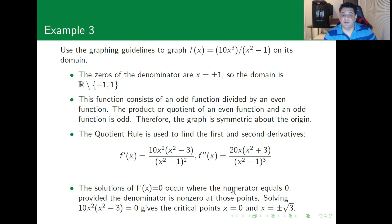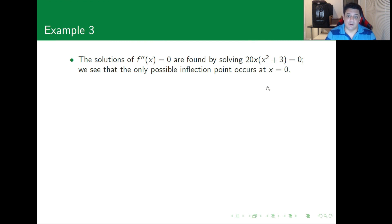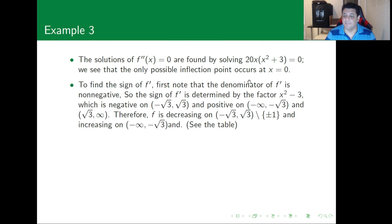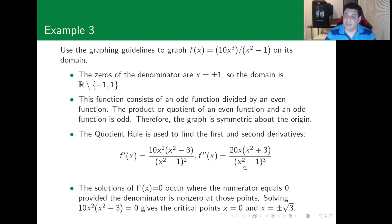We also have the possibility of critical points at -1 and 1, since the function is not defined there. For f''(x) = 0, it's simpler because the numerator is only zero when x = 0, so that's the main candidate for an inflection point. However, -1 and 1 are also possible inflection point candidates.